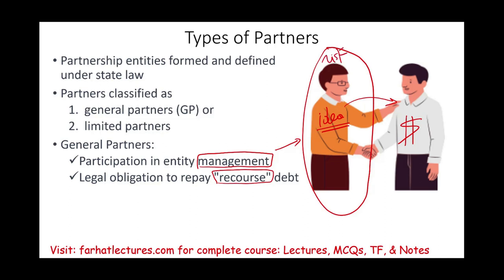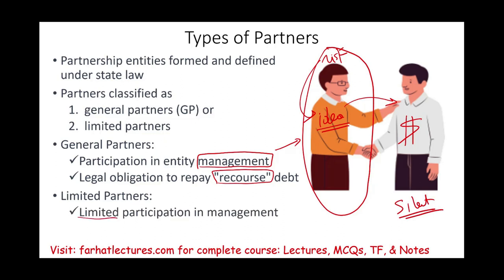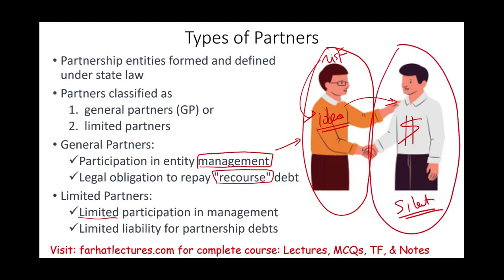The general partner is taking more risk because they only brought the idea and they believe in it. The limited partner — sometimes called the silent partner — has limited to no participation in management. They have limited liability for partnership debt, so the maximum they can lose is what they invested in the company. You cannot go after the limited partner's personal assets, but you can go after the general partner's personal assets, because the general partner is really the owner of the business.